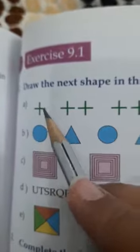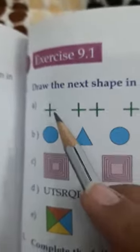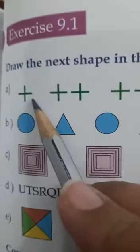First sum, they are given plus sign. First of all given 1 plus, then 2, then 3, then 4. Now what will come here? 5 plus. 1, 2, 3, 4, and 5.